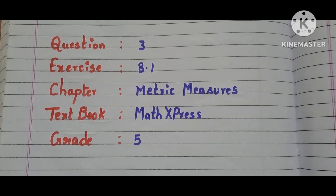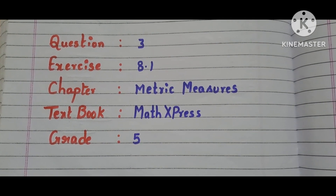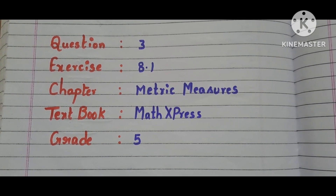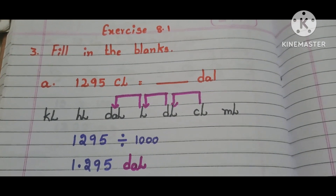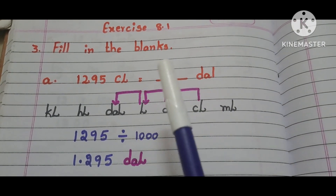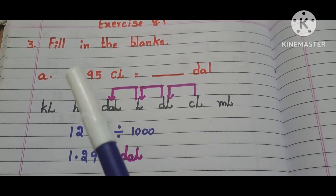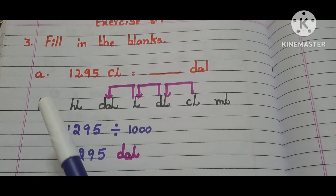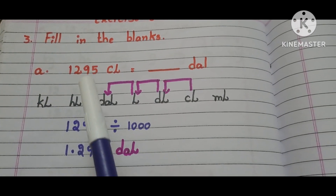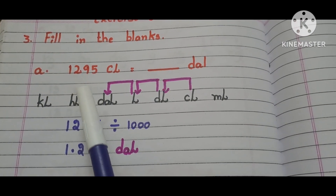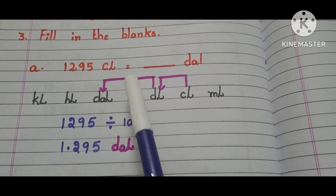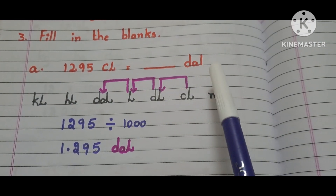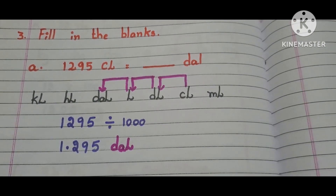For question number 1 and 2, please click the links given in the description box. Here, the question is fill in the blanks. Part A: 1295 centiliters is equals to how many decaliters?